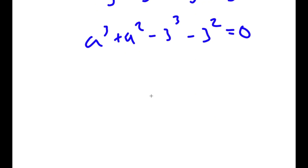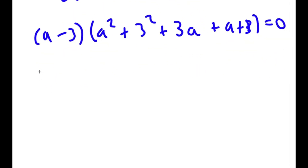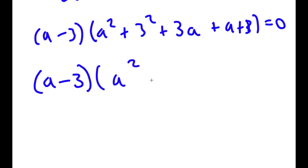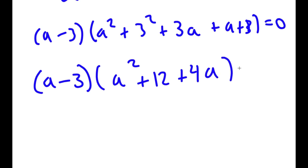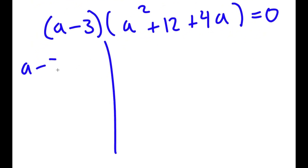I can rewrite this in the form (a minus 3) times (a² plus 3a plus 3 plus a plus 3), which simplifies to (a minus 3) times (a² plus 4a plus 12) is equal to 0.